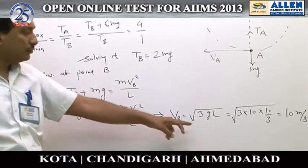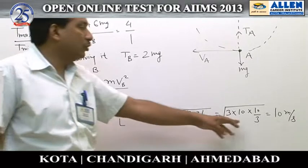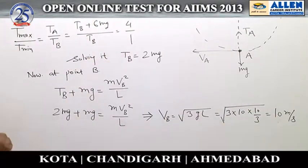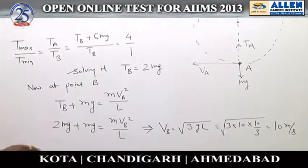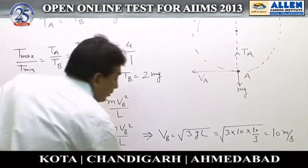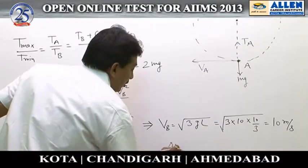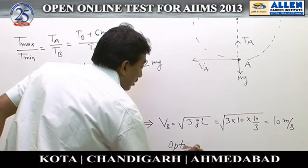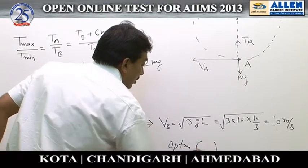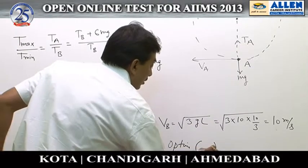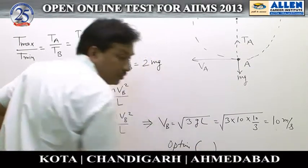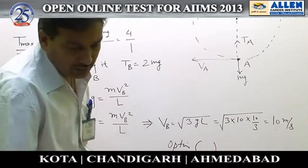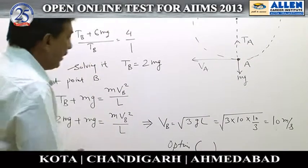Solving further, v_b equals 10 meters per second. So option 2 is the correct answer.